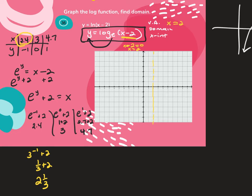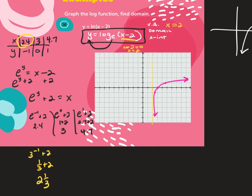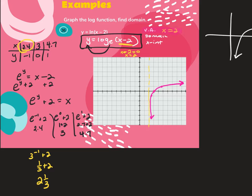So I'm graphing the points: approximately (2.4, -1), (3, 0), and (4.7, 1). My graph looks like that. I already have the vertical asymptote. The domain starts at the vertical asymptote and the graph points to the right, so it goes to positive infinity — domain is 2 to infinity. The x-intercept comes from the middle point of my t-chart where y equals 0.